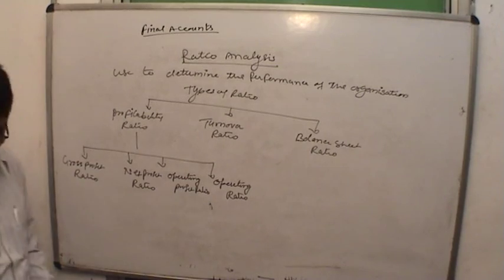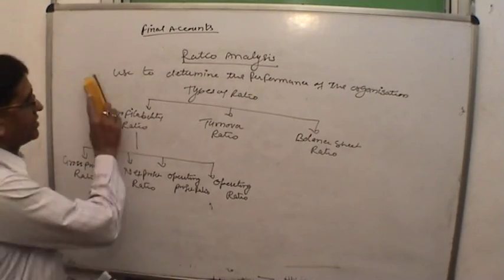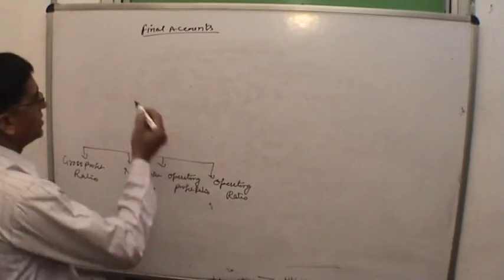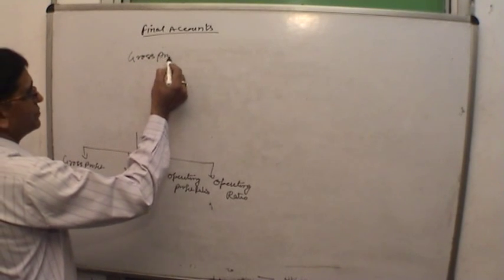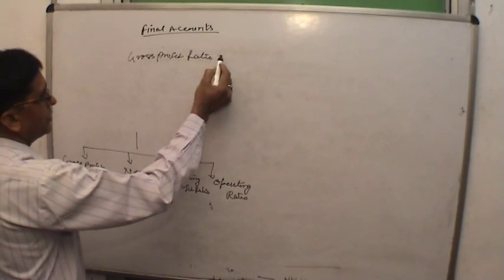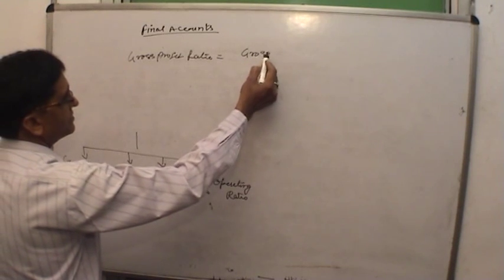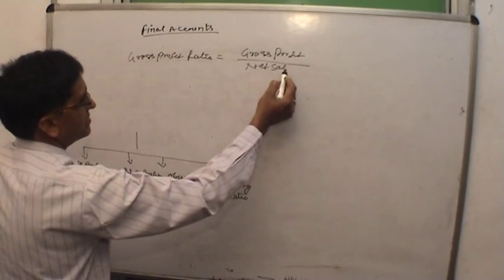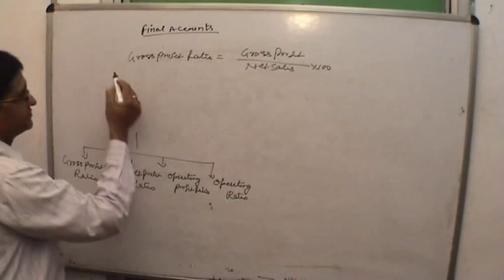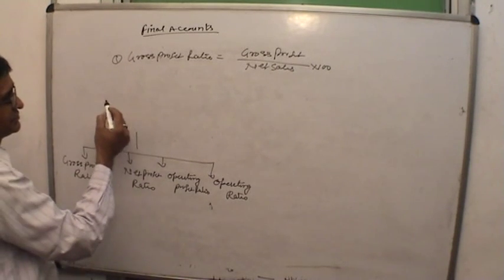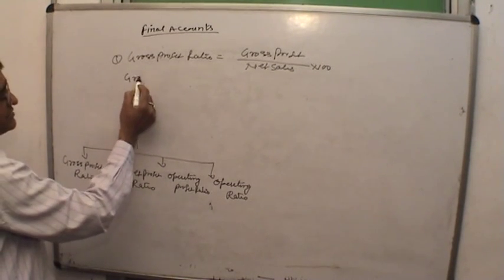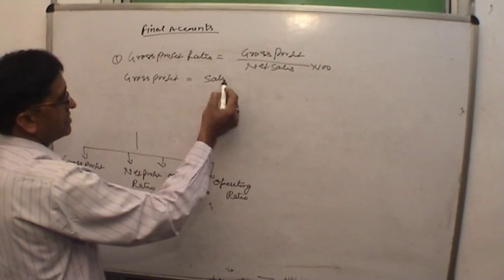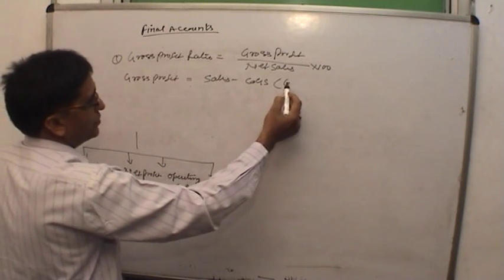The formula for gross profit ratio is: gross profit ratio equals gross profit divided by net sales, multiplied by 100. Gross profit equals sales minus cost of goods sold (COGS).